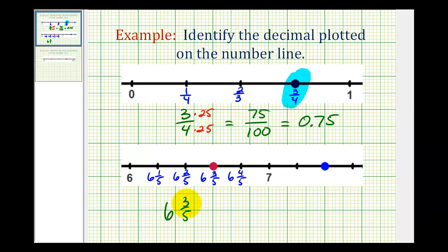And for three-fifths, we can write an equivalent fraction with a denominator of ten rather than a hundred like we did for the first example. We can multiply this by two and multiply this by two. So this is equivalent to six and six-tenths.